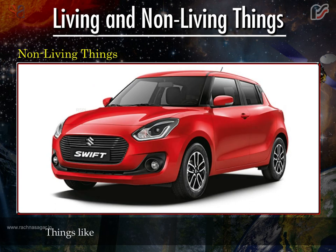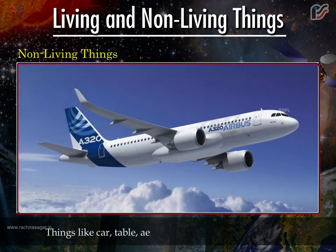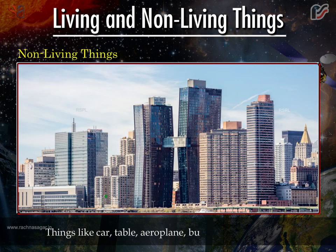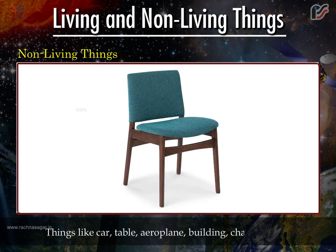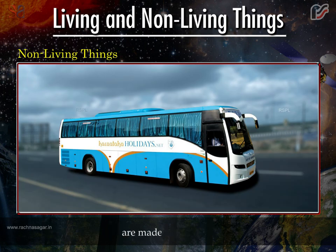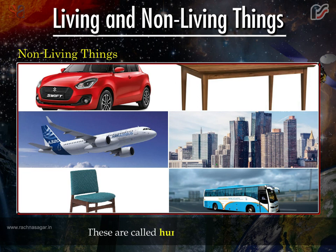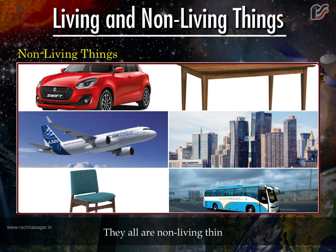Things like car, table, aeroplane, building, chair, bus, etc. are made by humans. These are called human-made things. They are all non-living things.